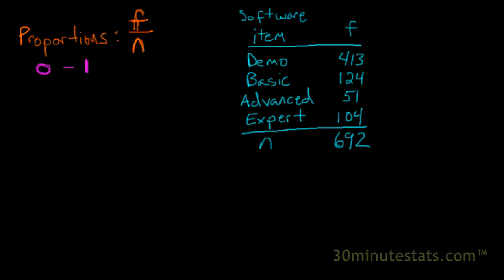So we'll calculate the proportion for the demo using our f divided by n formula. It's 413, that's the frequency for the demo version, divided by 692, which is our sample size. We get a proportion that is equal to 0.597. So over half here on our scale from 0 to 1, over half of our software items that were sold are the demo version.